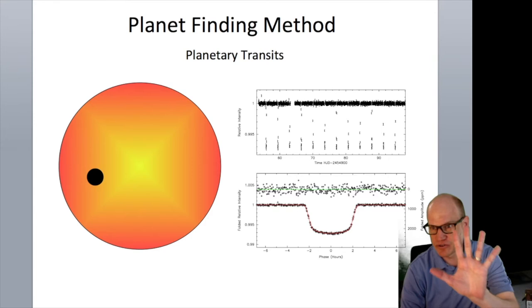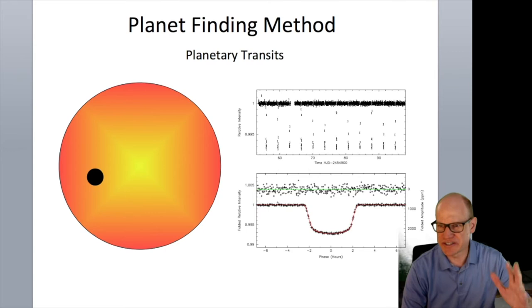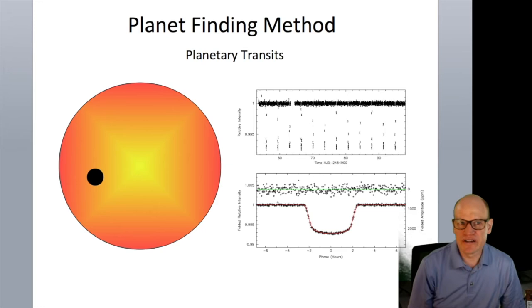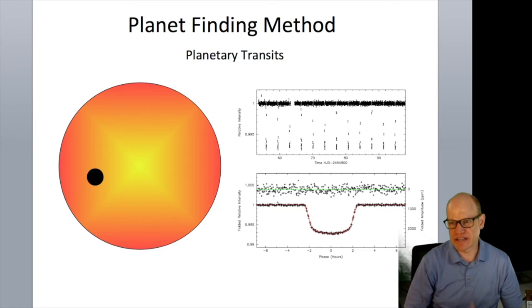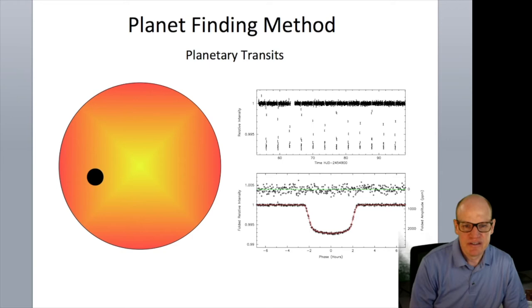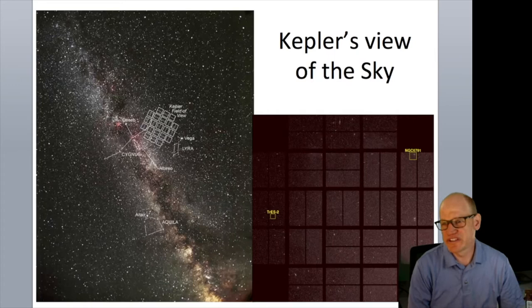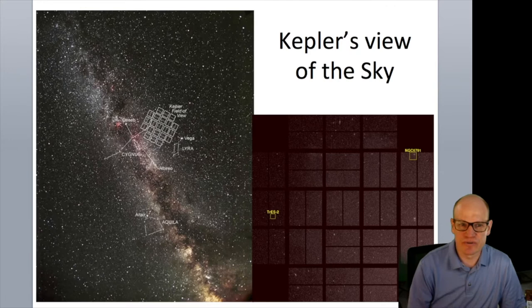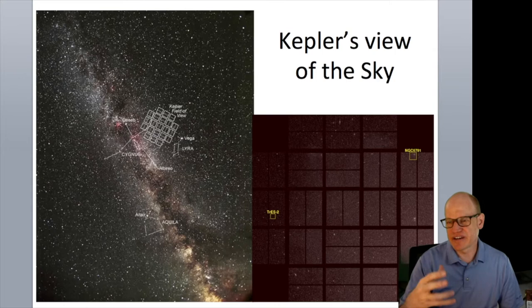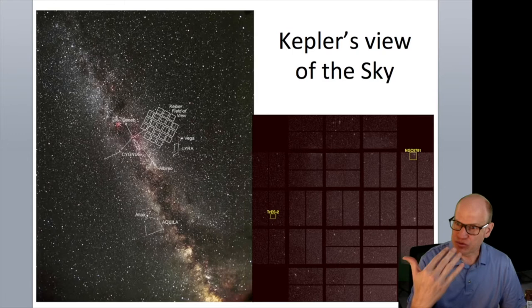Kepler did have a filter in front of the photometer, but it was a wide white-light filter covering roughly 400 to 800 nanometers — essentially the whole visible range — unlike instruments such as the Sloan Digital Sky Survey with separate color filters. The emphasis on Sun-like stars drove this choice, since the Sun is brightest in visible light.